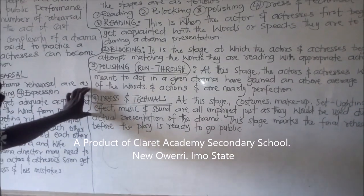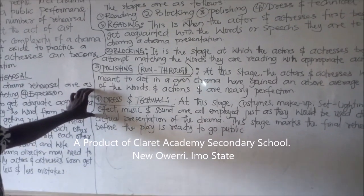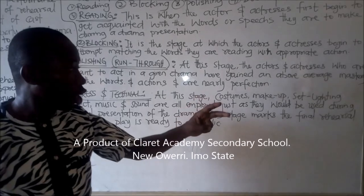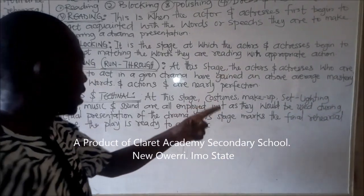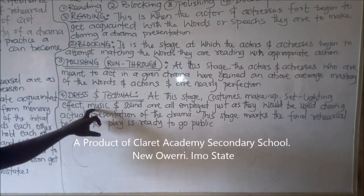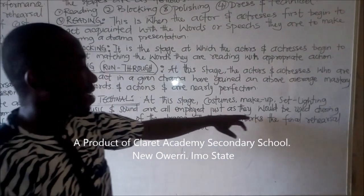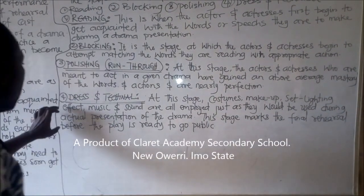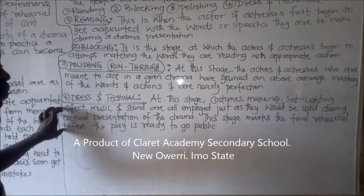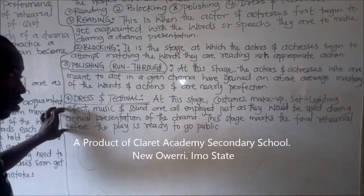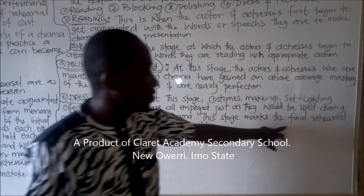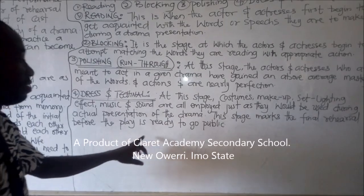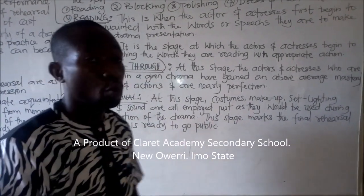The last on the list is dress and technical. At this stage, costumes, makeup, set light effects, music, and sounds are all employed, just as they would be used during the actual presentation of a drama. This stage marks the final rehearsal before the play is ready to go public.